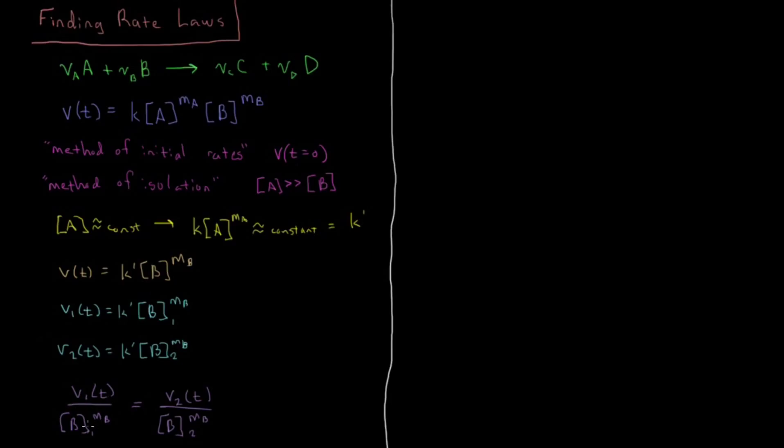Then we can rearrange these, multiply both sides and divide them by whatever values you need to get to this rearrangement here, which is V1/V2 equals ([B1]/[B2])^MB. Both of these are to the power MB, so I can factor that out and take that to the outside there. Now I can take the natural log of both sides. I have ln(V1/V2) equals MB times ln([B1]/[B2]).